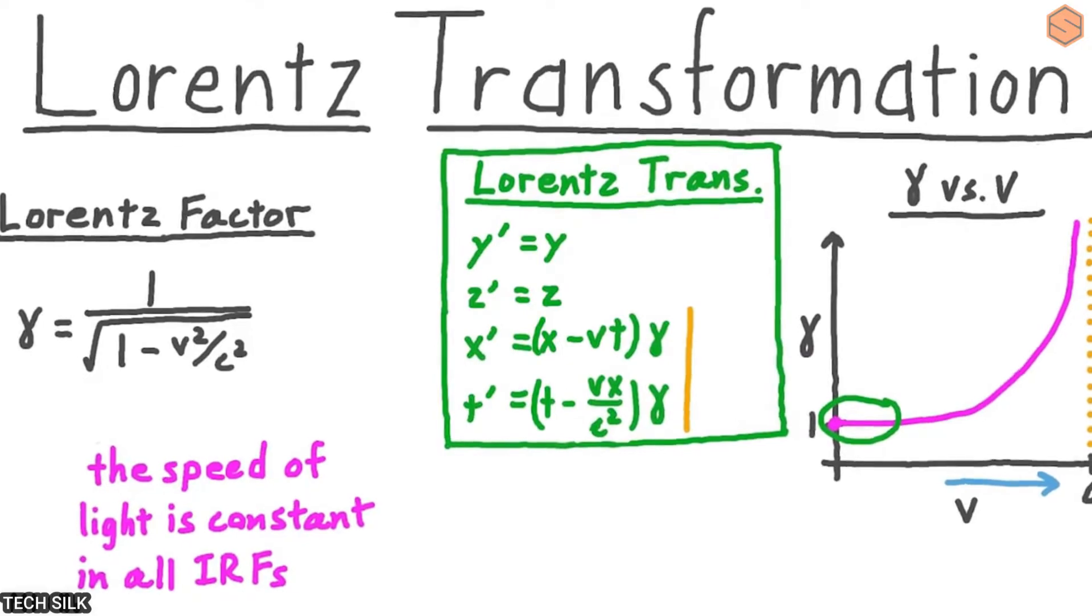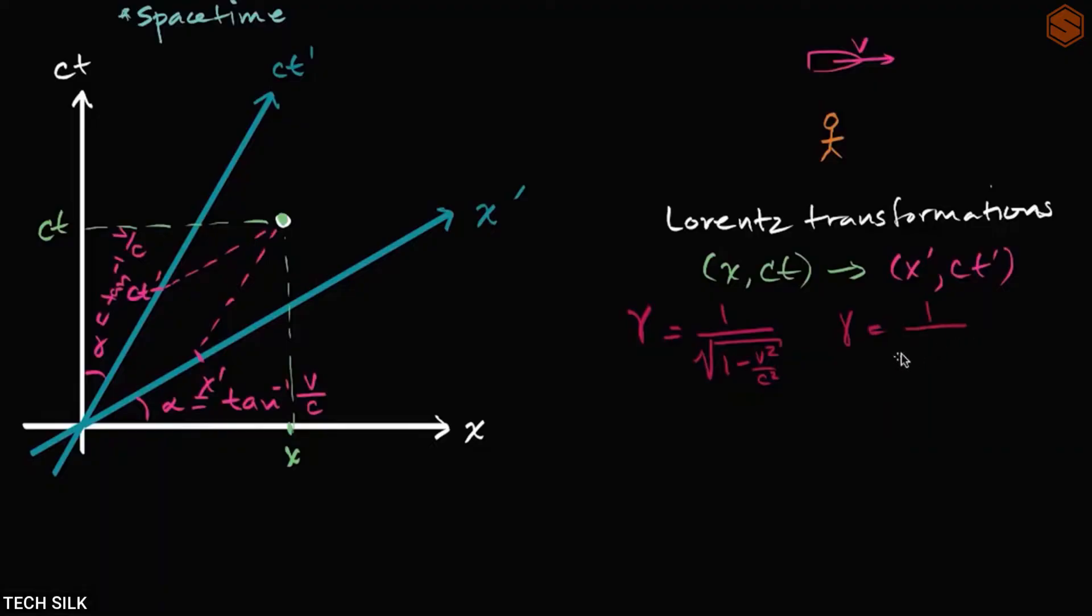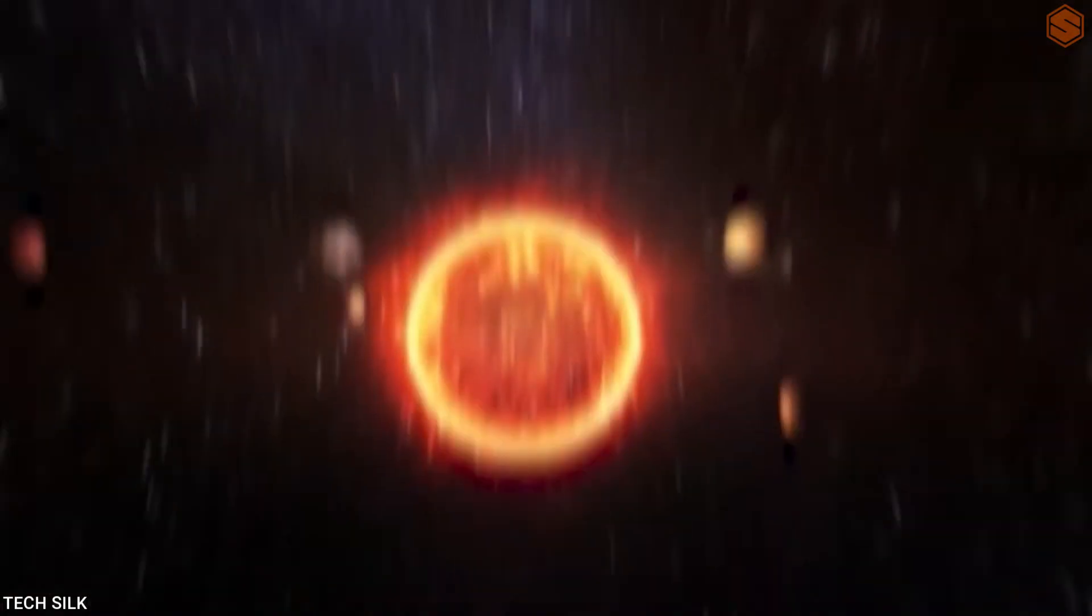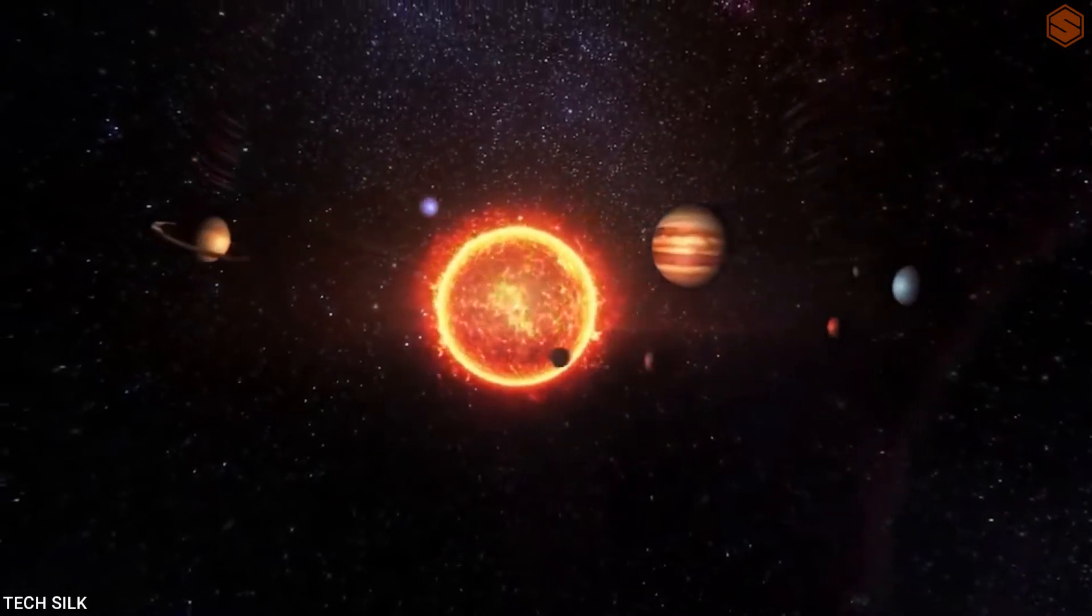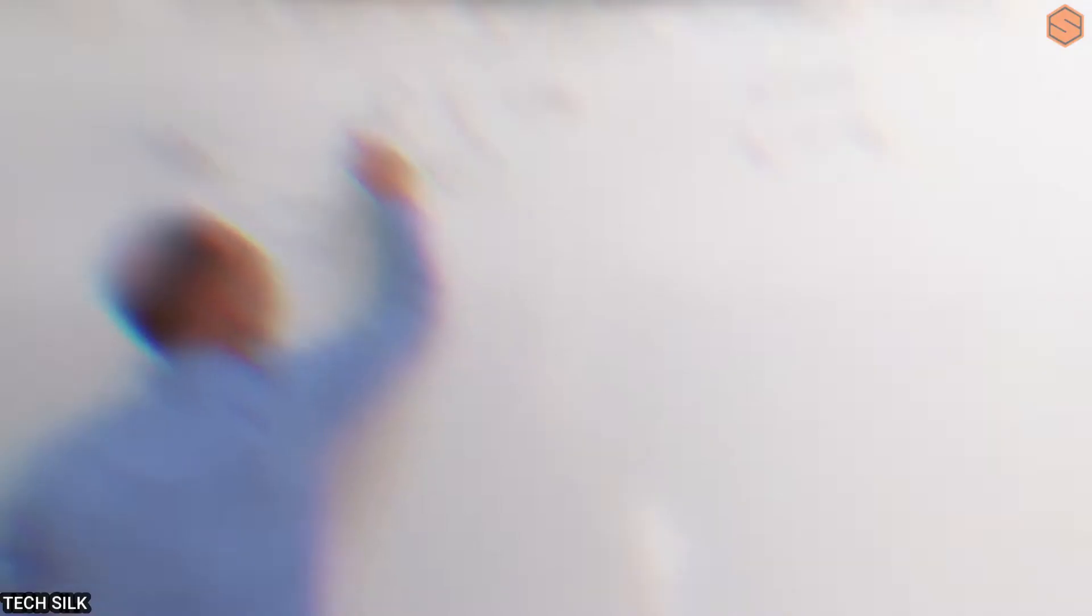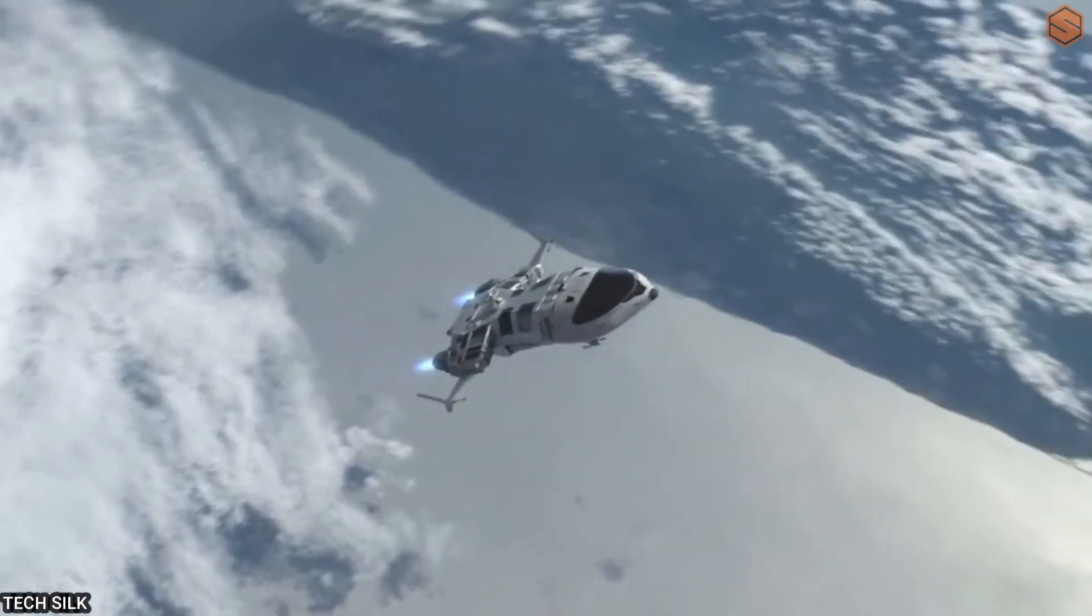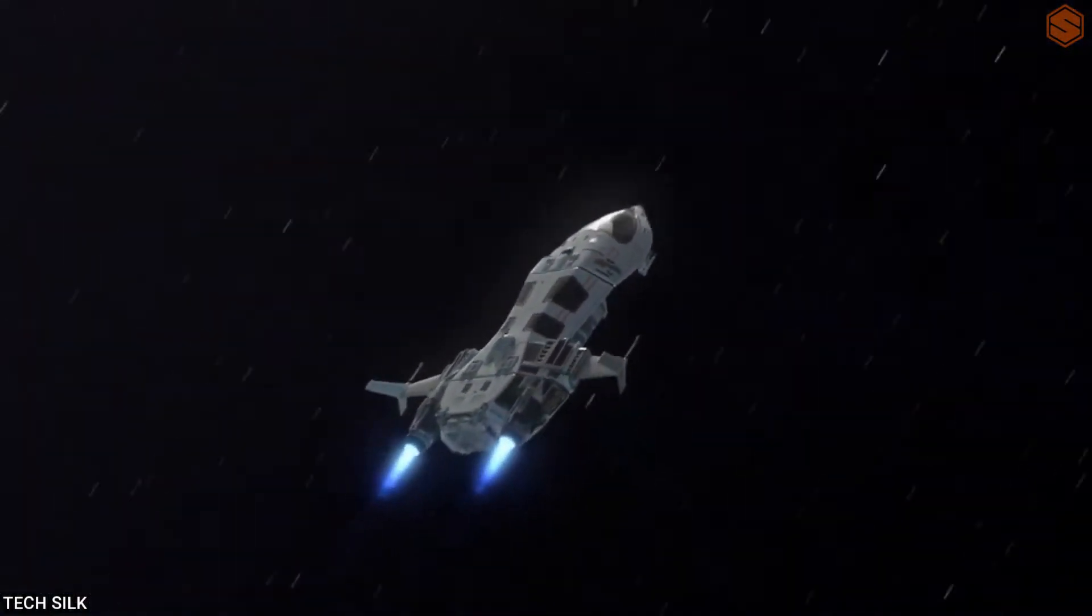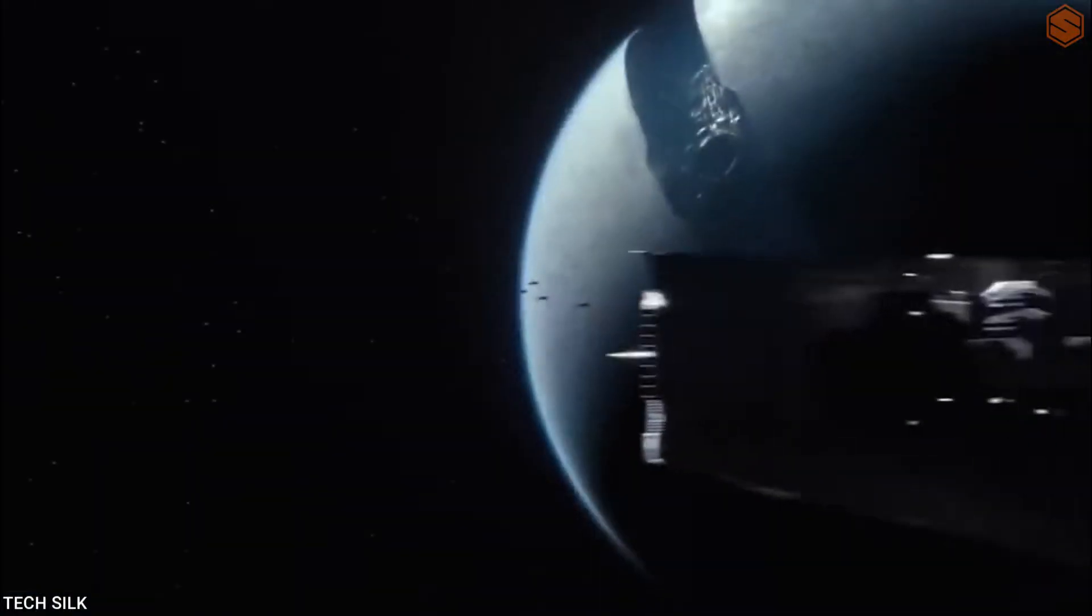Another example is the superluminal antiproton coupling experiment. This experiment also measured the time of flight of particles, but it used antiprotons instead of neutrinos. The experiment found that the antiprotons arrived at their destination 60 picoseconds earlier than expected if they had been traveling at the speed of light. However, the results of this experiment have also been questioned and it is not clear if the antiprotons actually traveled faster than light or if there was some error in the measurement again.